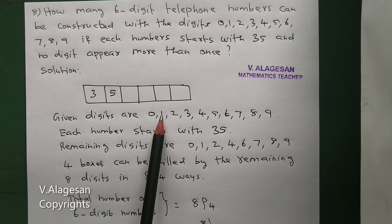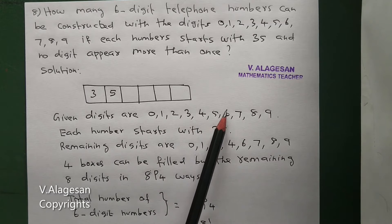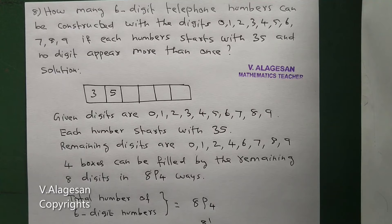Given digits, what are the numbers? 0, 1, 2, 3, 4, 5, 6, 7, 8, 9. Total are 10 digits. Okay? Each number starts with 35.